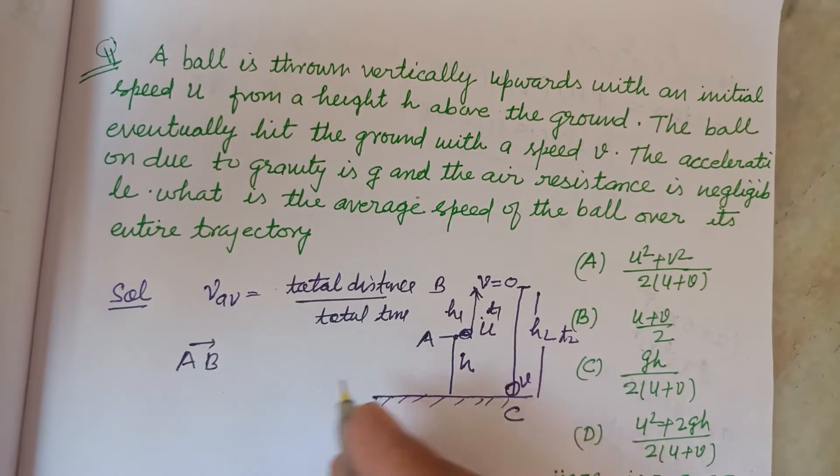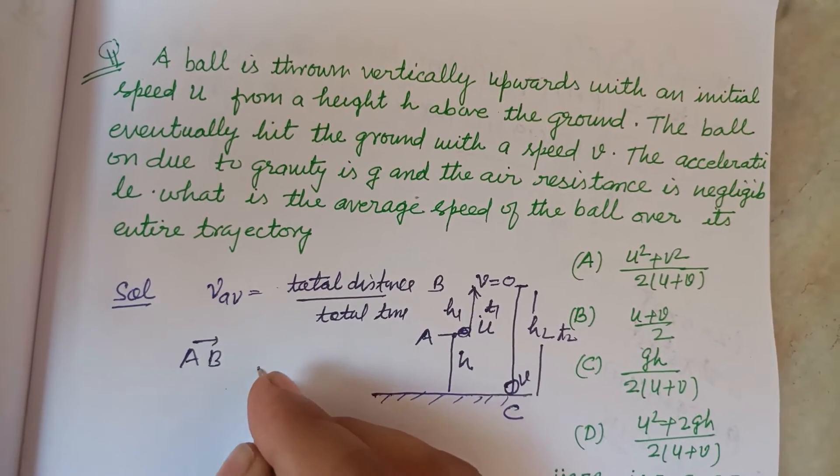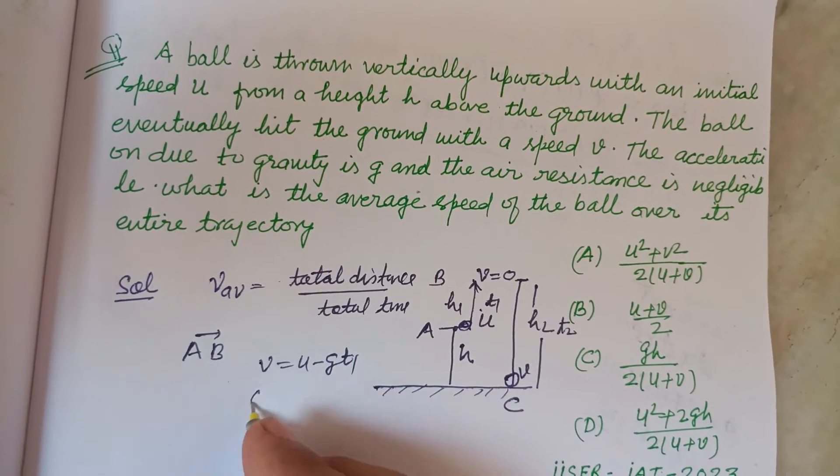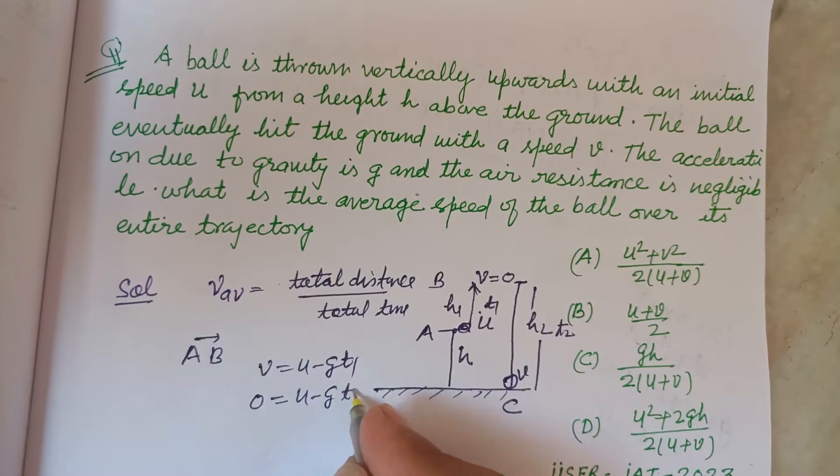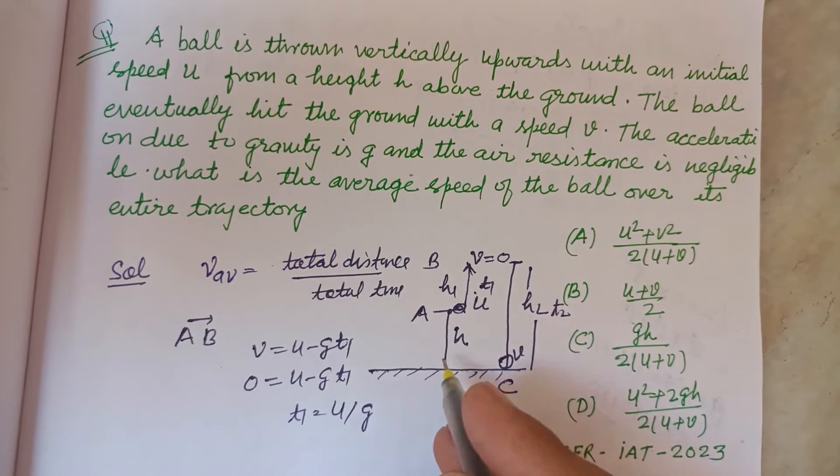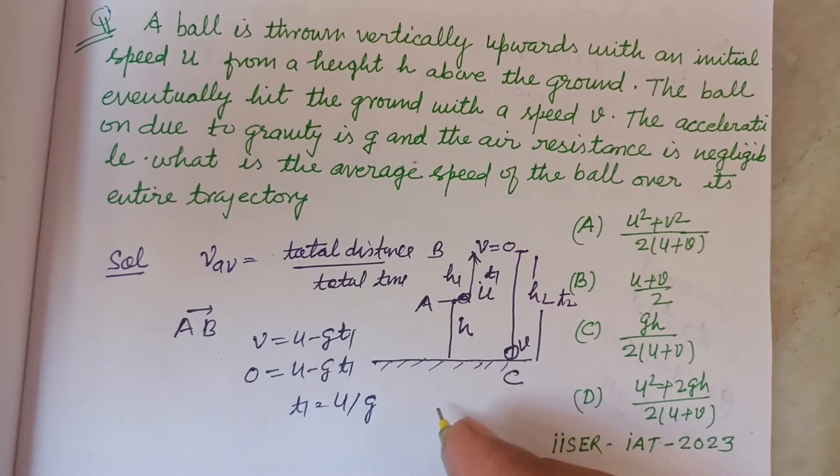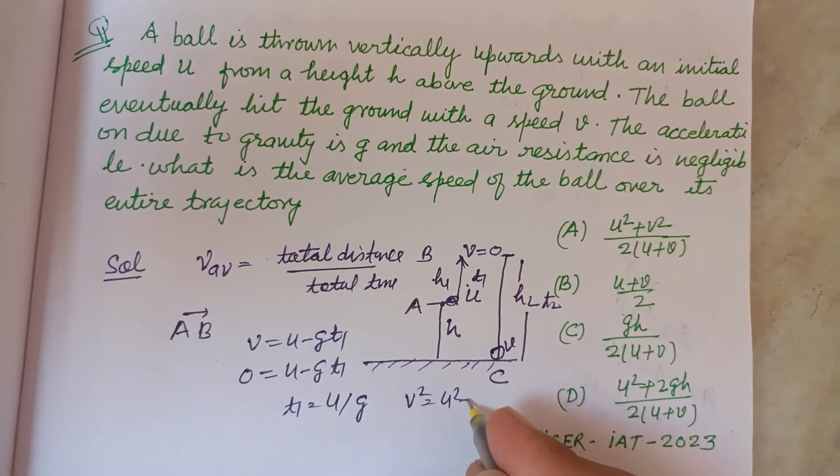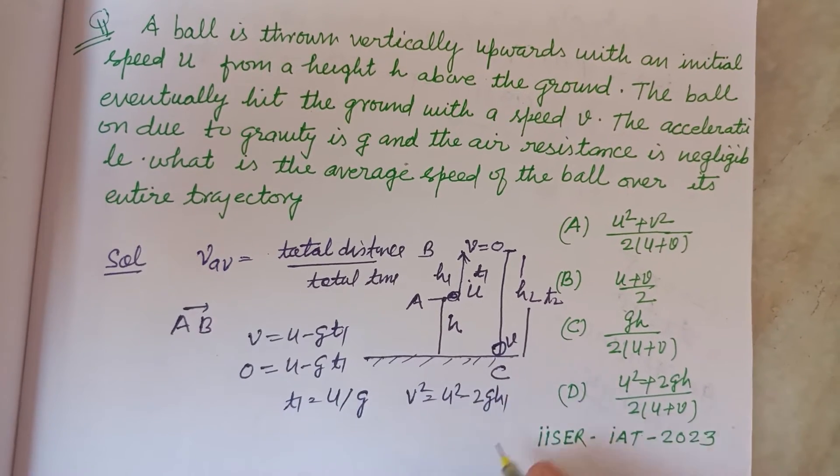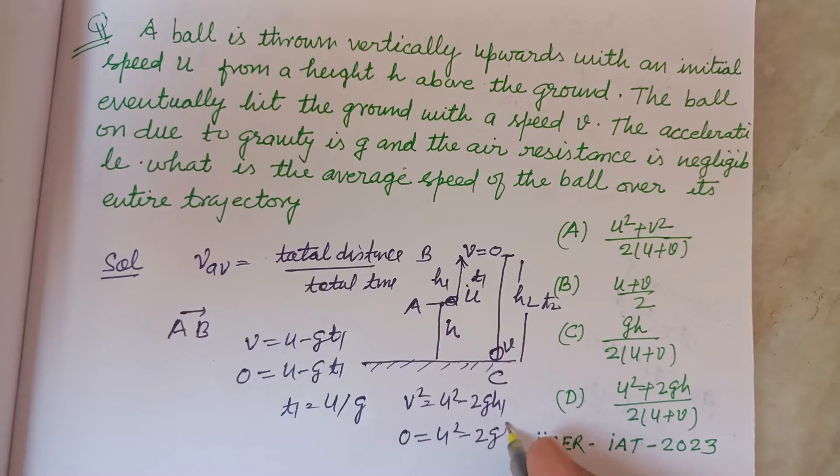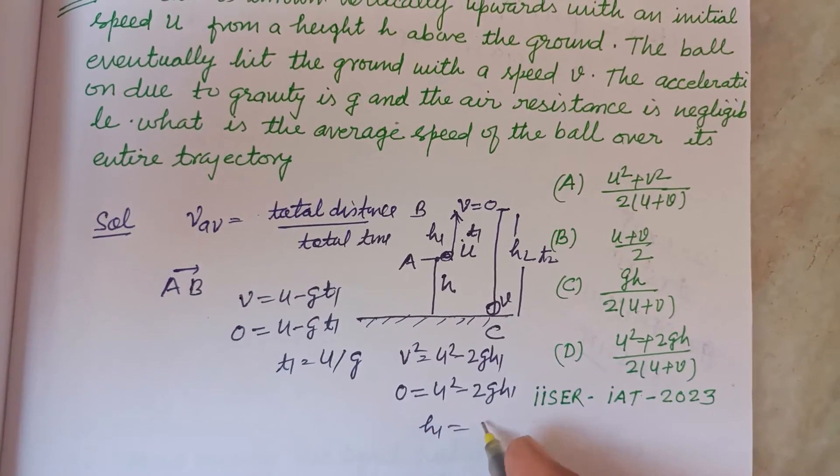For A to B motion, we have V equal to U minus gt1. V is final, 0 equals U minus gt1, so t1 equals U over g. And this height: V squared equals U squared minus 2gh1. V is 0, so U squared minus 2gh1, therefore h1 equals U squared over 2g.